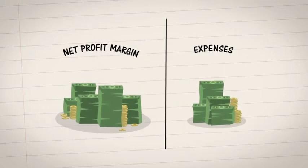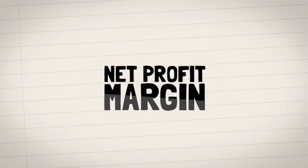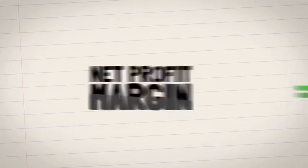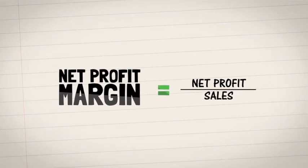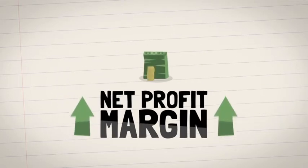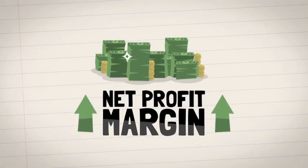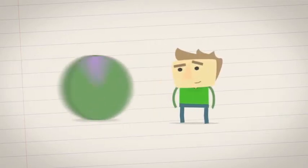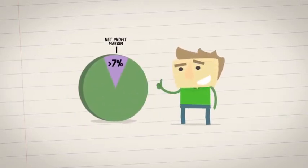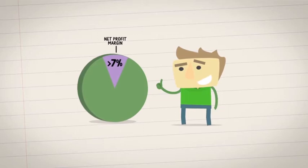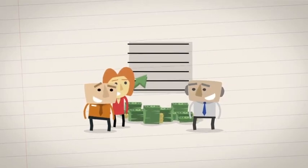The second ratio is net profit margin. This represents the portion of money left after subtracting all expenses. To calculate net profit margin, divide net profit by sales. The higher the margin, the more profitable the company is. In general, look for margins of 7% or more.